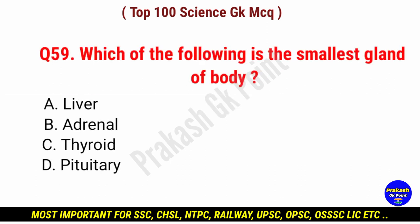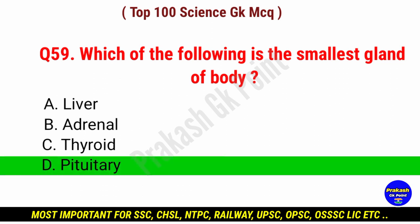Which of the following is the smallest gland of body? Answer: option D, pituitary gland.